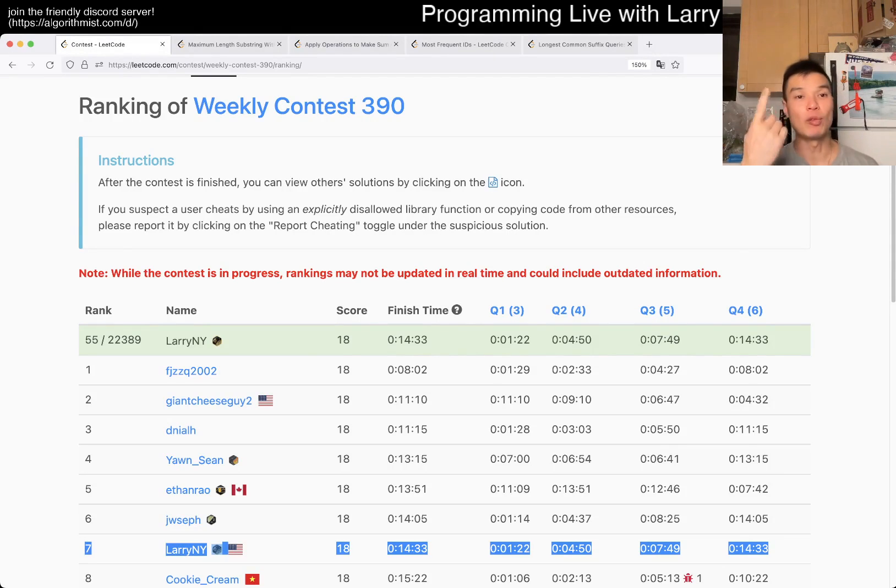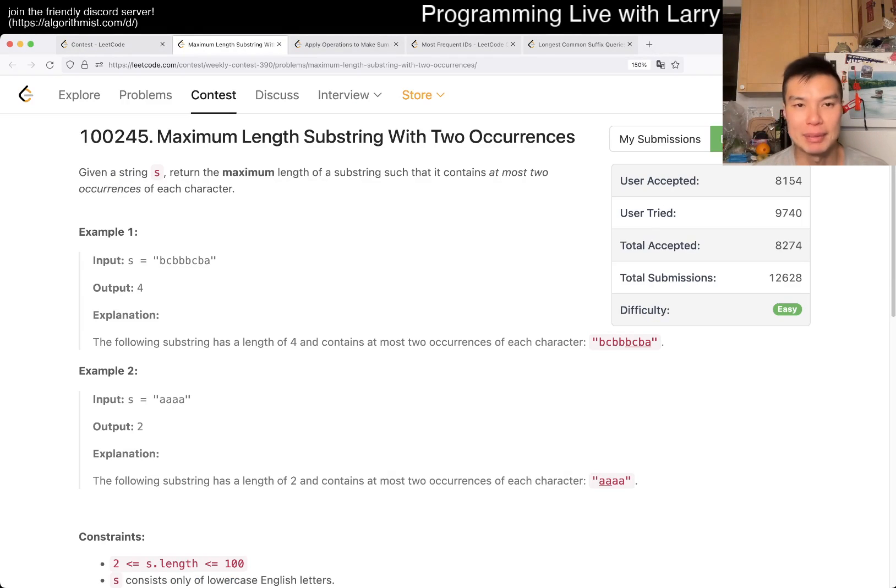Hey, hey everybody, this is Larry. This is Q1 of the Weekly Contest 390, maximum length substring with two occurrences. Hit the like button, hit the subscribe button, join me on Discord, let me know what you think about this one.